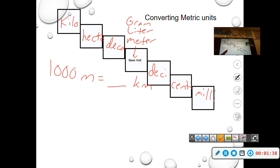So what you're going to do first, you're going to find where you see meters on there, which is where it says basic unit, and you're going to find where kilometers is. And what you're going to do is you're going to count how many places to get from one to the other. So we're going to start here, and we go up one stair, two stairs, three stairs.